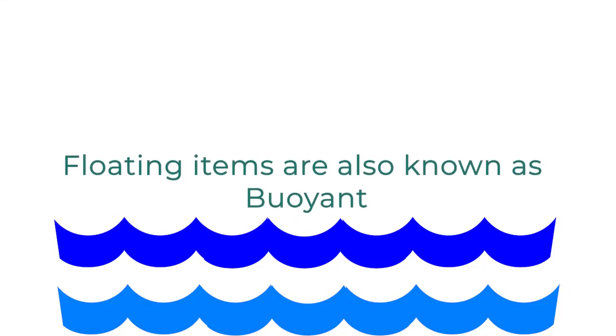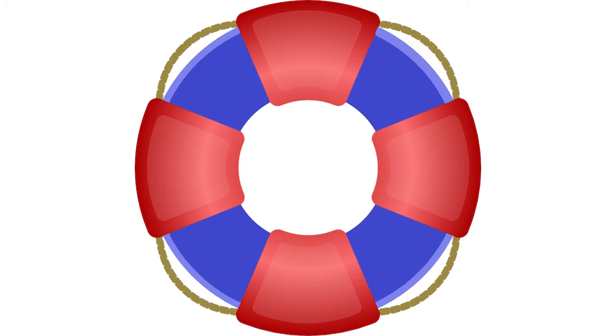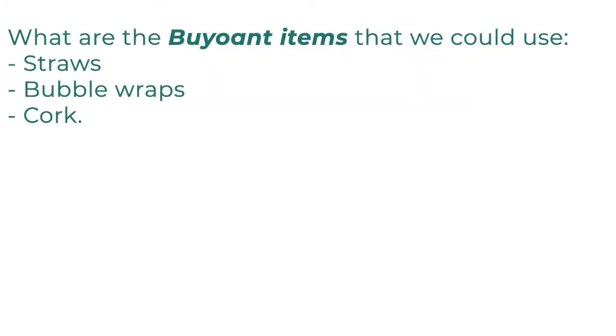We saw a few items sink and a few float. The materials that float are also known as buoyant. You can make things float by attaching a buoyant material to it. Remember the swimming pool when you first entered and you didn't know how to swim? You used materials like inflatable tubes and water wings. What could be these buoyant items that we can use? Straws, bubble wraps, and even cork.